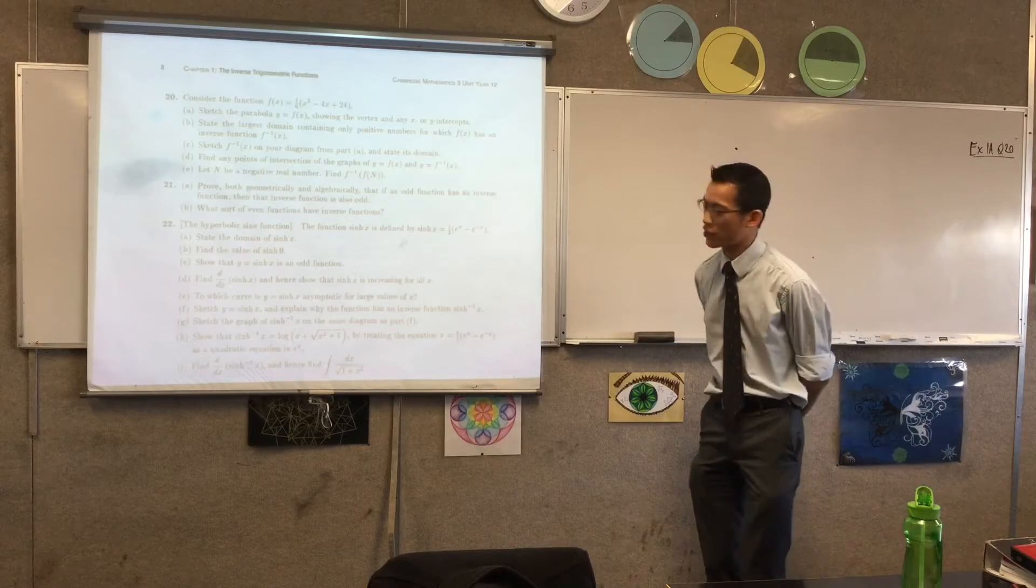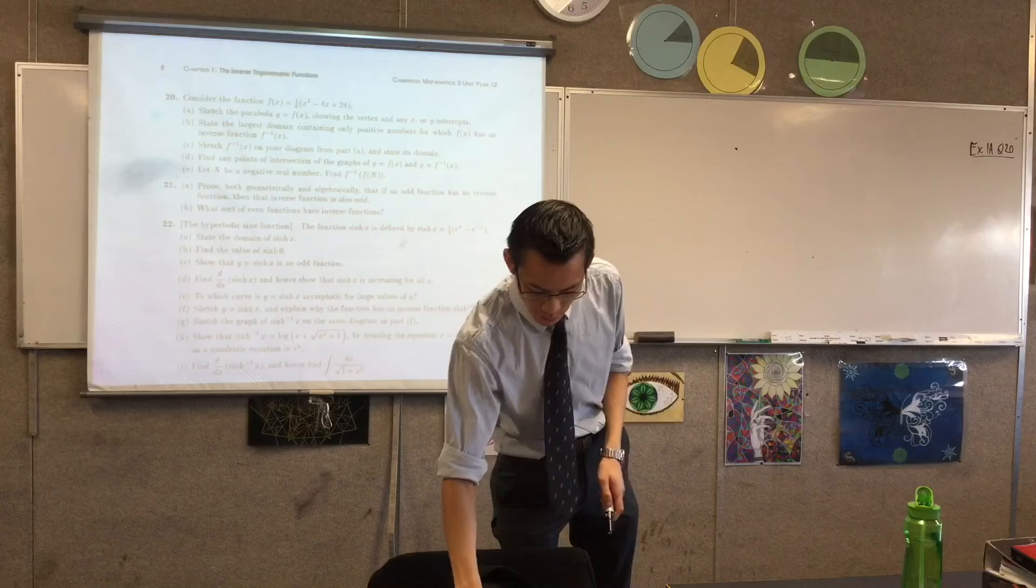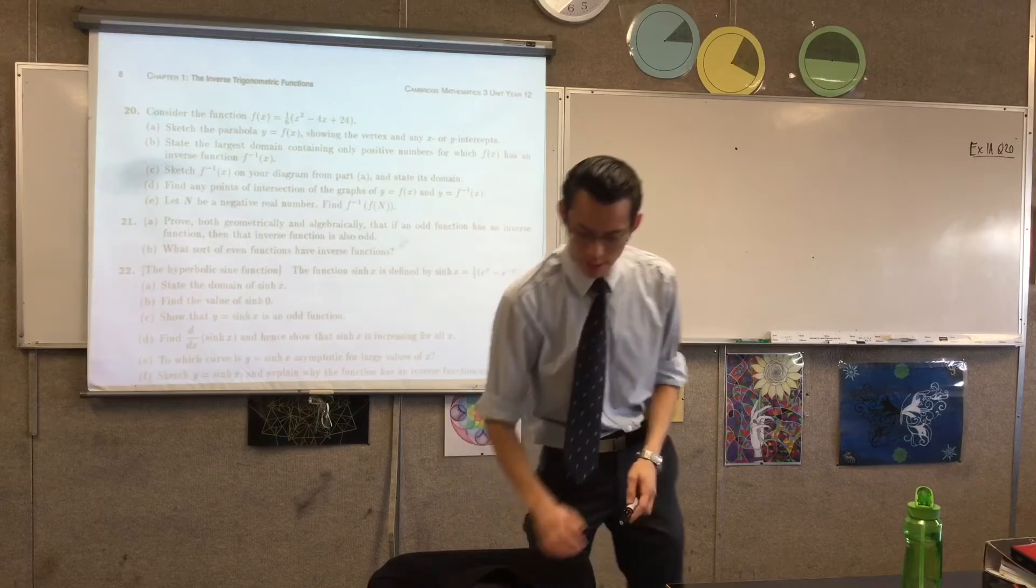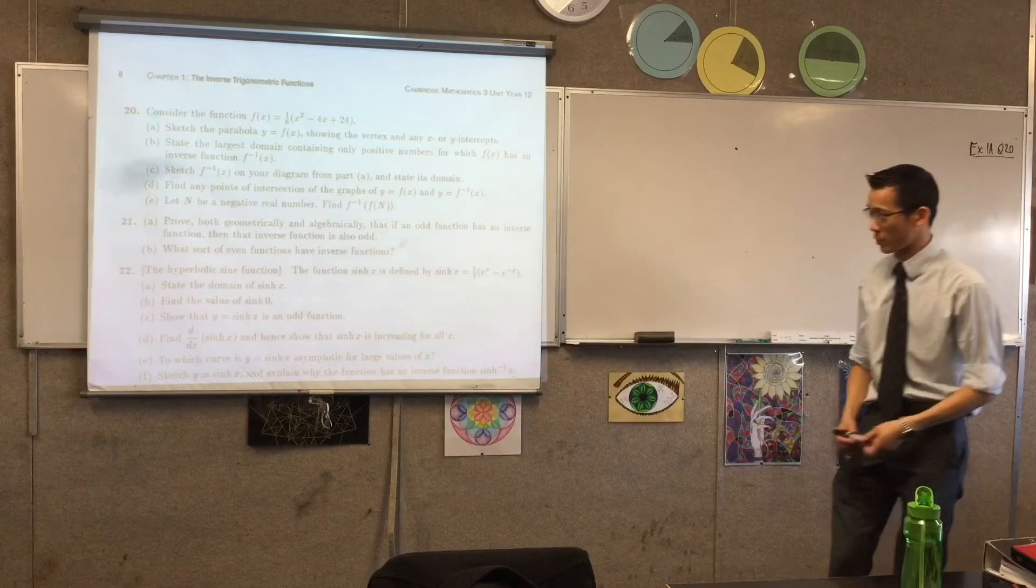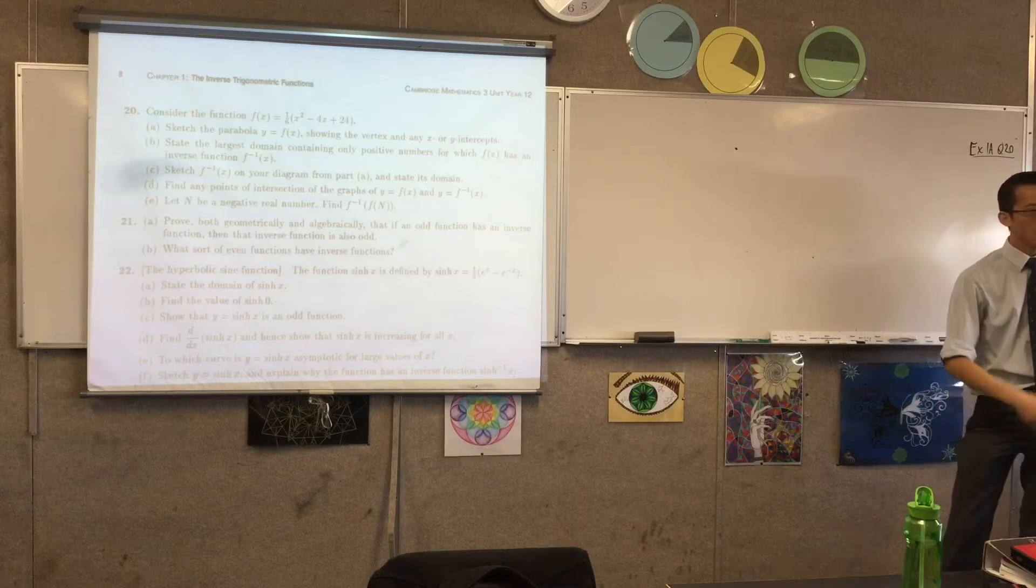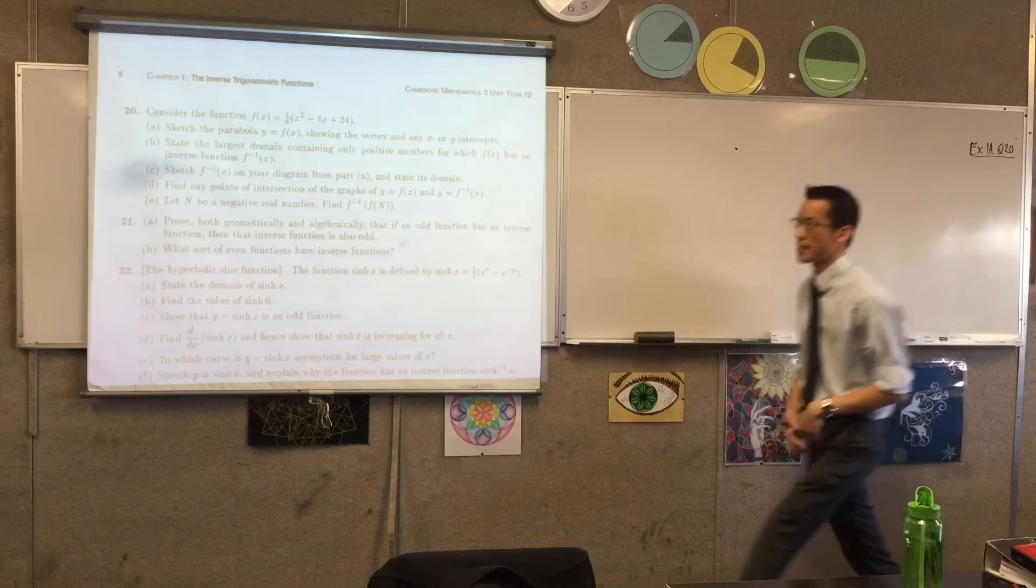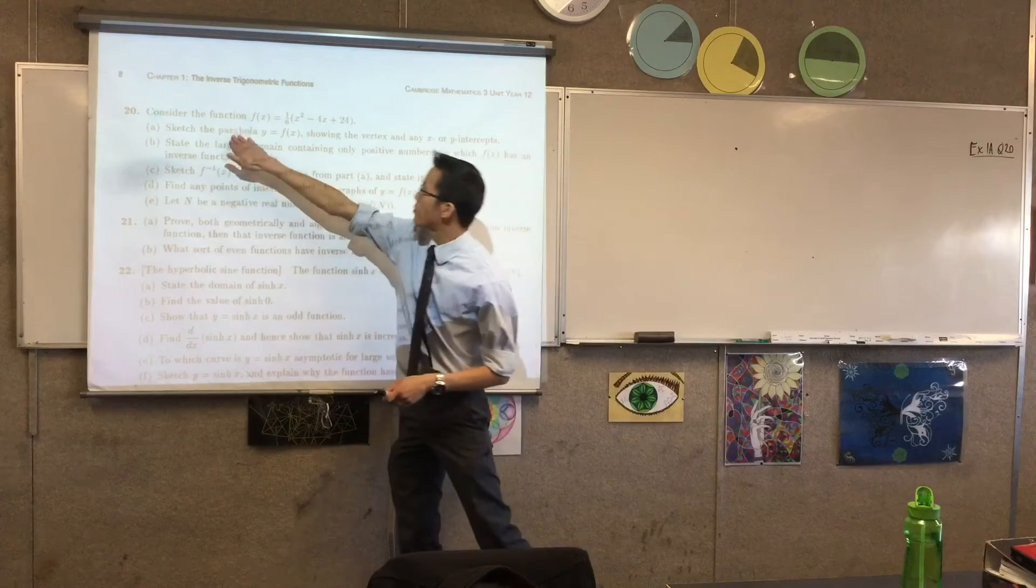So, question 20, consider the function, I'll zoom in a little bit for you. Consider this function a sixth of x squared minus 4x plus 24. Recognize what kind of shape this is, they even tell you right off the bat, it's a parabola.